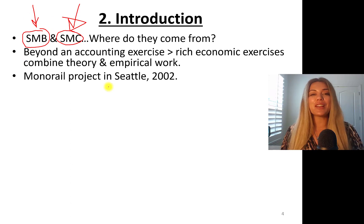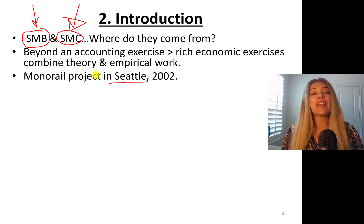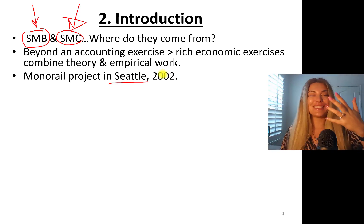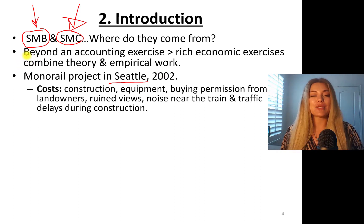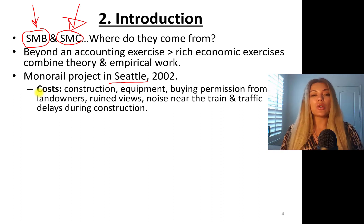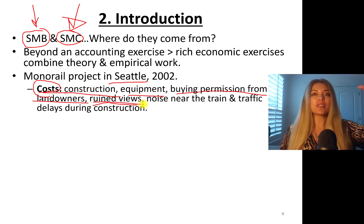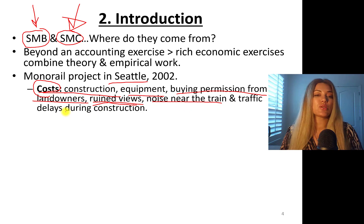Let's talk about this very old project. I was actually in Seattle last summer for a conference and I've seen the monorail. So the monorail project in Seattle was proposed in 2002. The costs of this project included construction costs, equipment, buying permission from landowners, ruined views — for instance, if you had a condo with views and a monorail covered it — noise near the train, and traffic delays during construction.